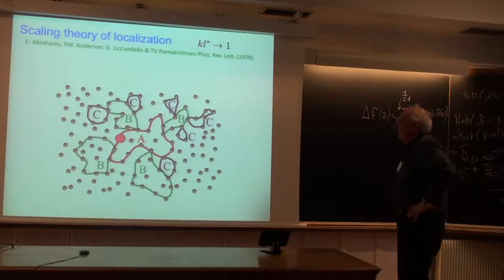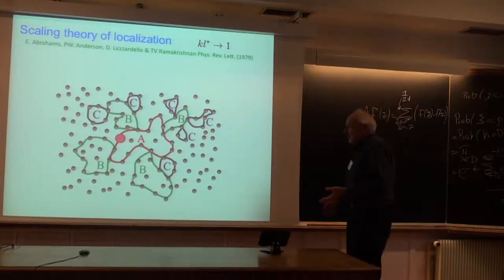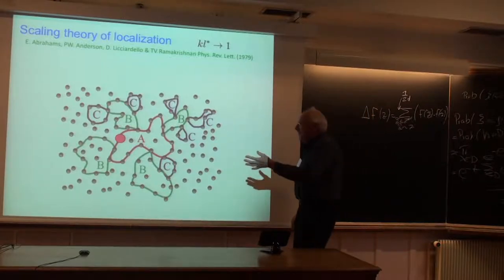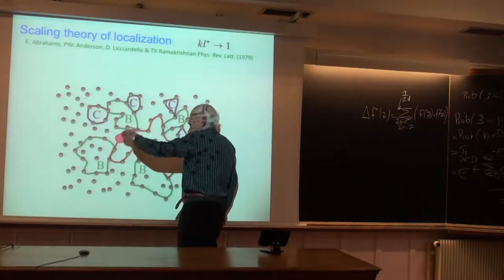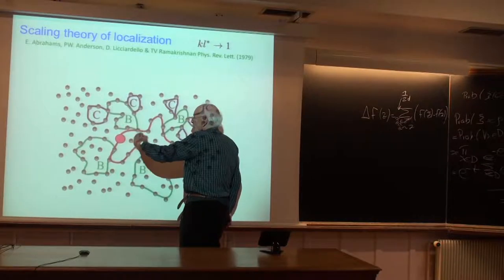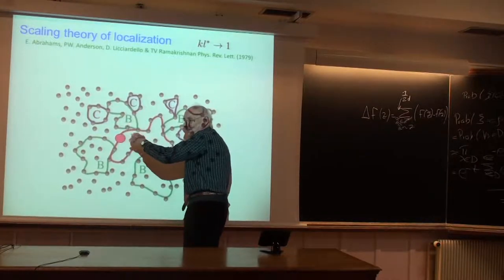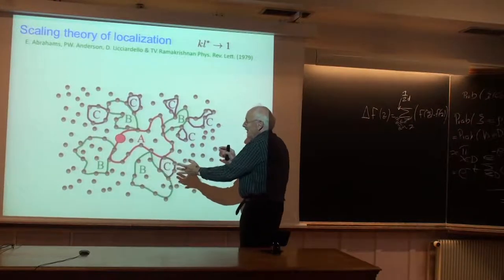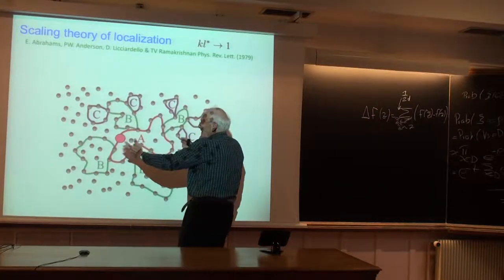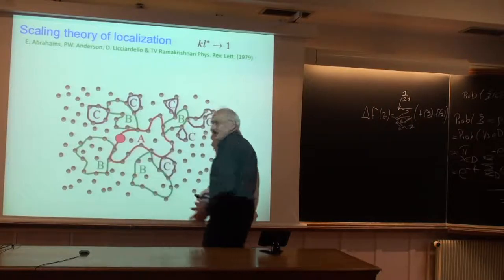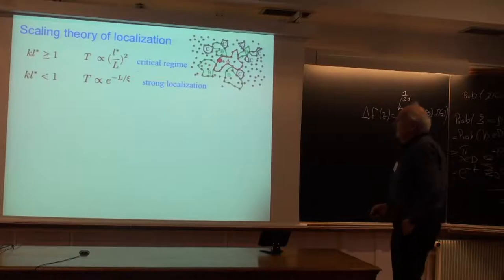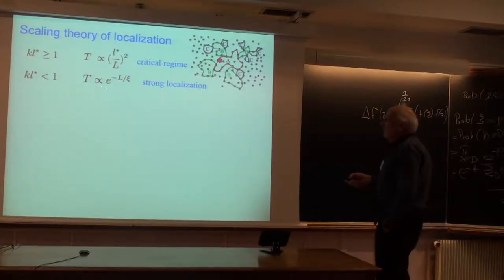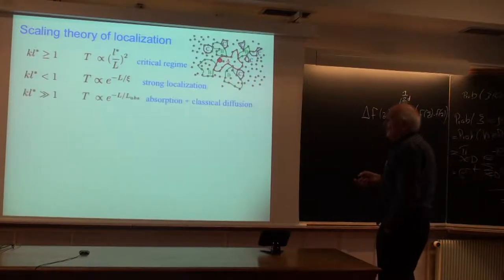Physically, one way to picture localization is through counter-propagating loops interfering locally. You generate primary loops, daughter loops, granddaughter loops, and so on, making the diffusion constant depend on length scale. The signature of localization is that transmission decays exponentially with the localization length — which is hard to distinguish from absorption, which does the same thing even in a non-localized case.